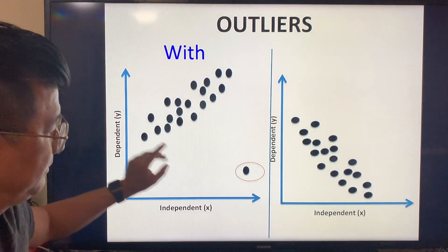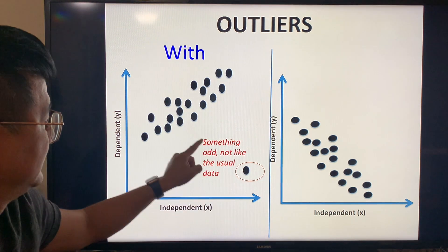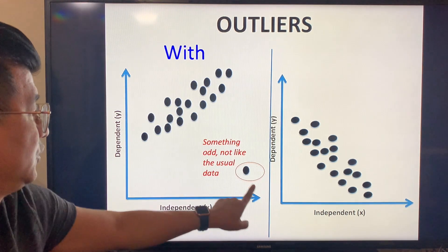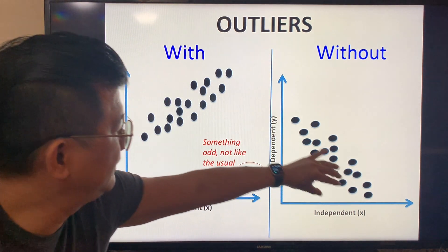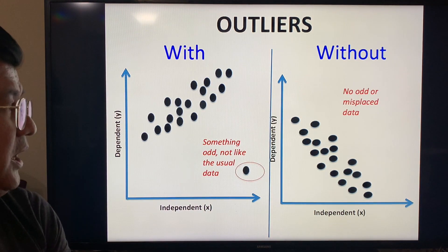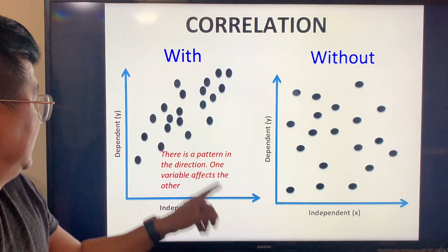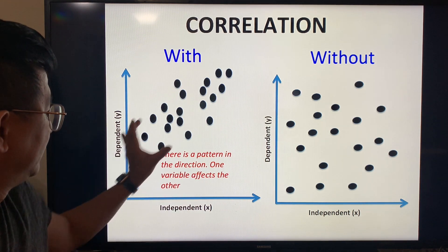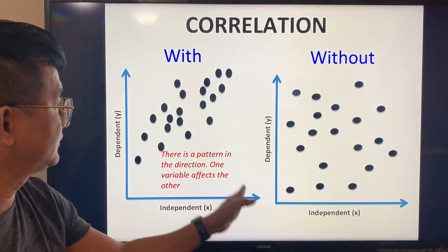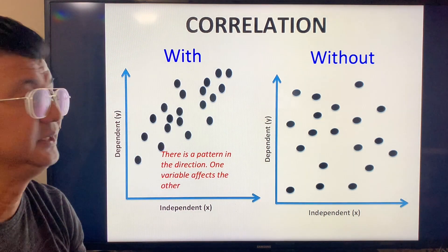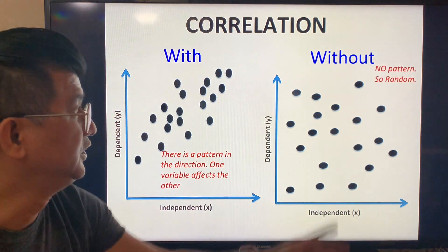Regarding outliers: the data may already show a trend but there is one data point that is odd or different from the usual — that is the outlier. Without an outlier, most data follow the pattern. With association means there is a pattern and one variable affects the other. Without association means no pattern, no correlation — the variables don't affect each other.